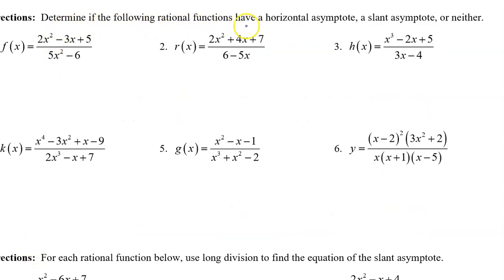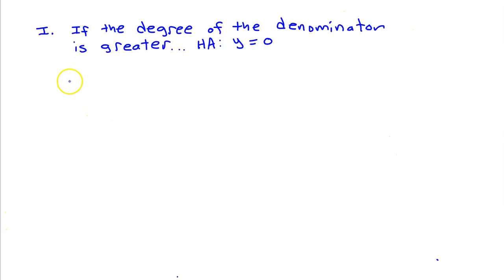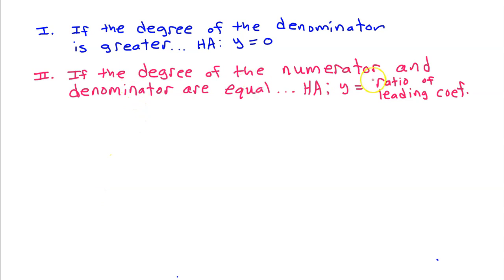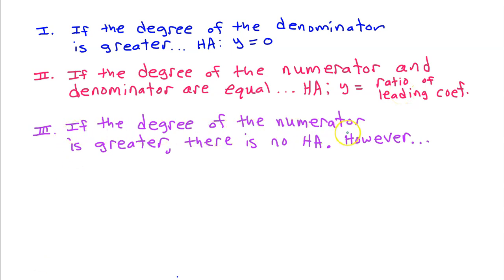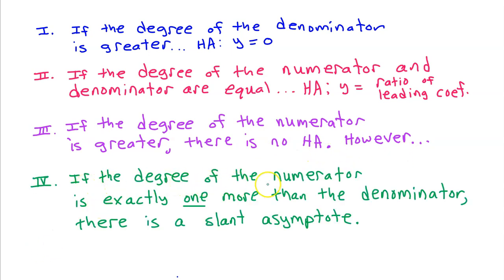Determine if the following rational functions have a horizontal asymptote, a slant asymptote, or neither. Here are some things we have learned in previous lessons. Number one, if the degree of the denominator is greater, there is a horizontal asymptote and it is y equals zero. If the degree of the numerator and denominator are equal, there is a horizontal asymptote and it is y equals the ratio of the leading coefficients. If the degree of the numerator is greater, there is no horizontal asymptote. However, if the degree of the numerator is exactly one more than the denominator, there is a slant asymptote.